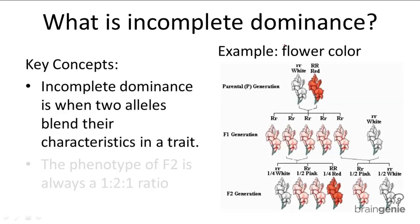For example, in flowers, neither the red nor the white allele is dominant over the other. So instead of having a red and white splotched flower as their offspring, all their offspring are pink. Red and white blended together make pink. Makes sense, right?